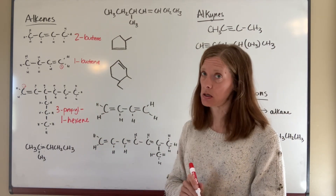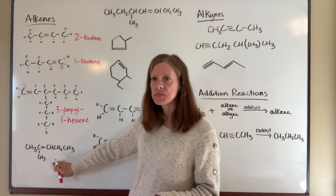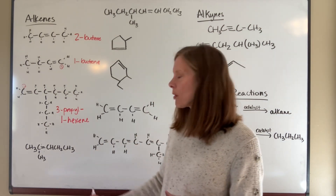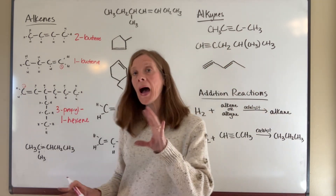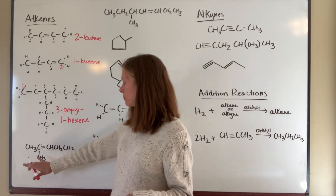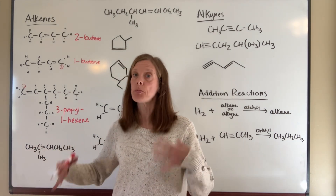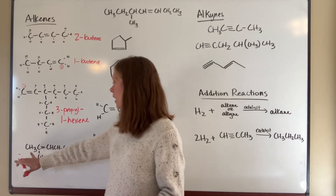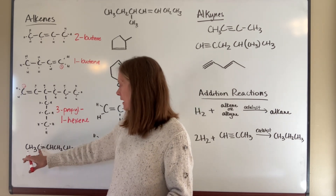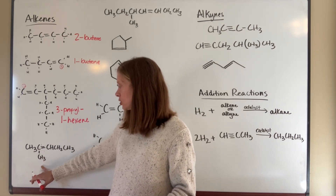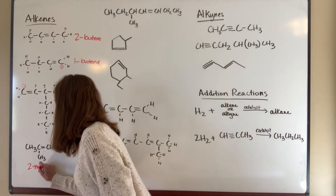The same principle applies here: you number so that the double bond and substituents have the lowest possible numbers. If you have to choose between a substituent group and the double bond for the lowest number, the double bond takes priority. In this example, the carbon chain is one through five, and both the substituent and the double bond share the same number, giving 2-methyl-2-pentene.